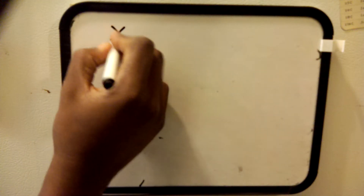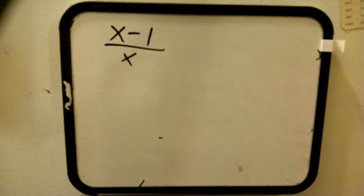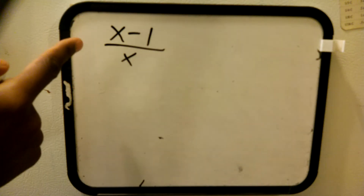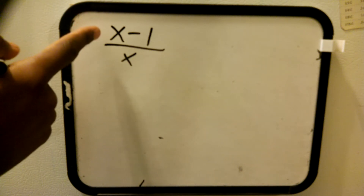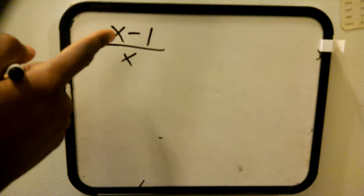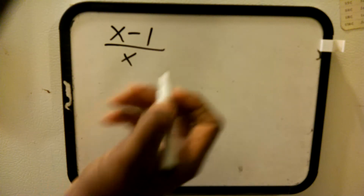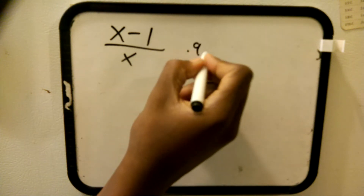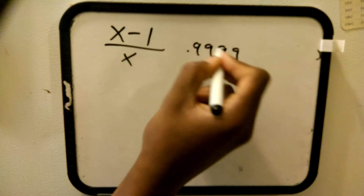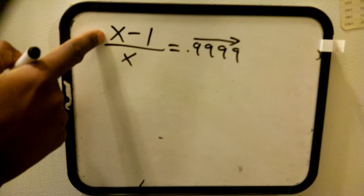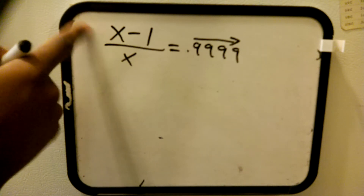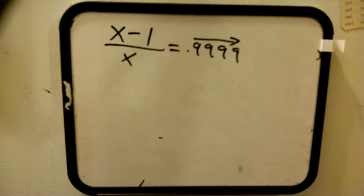Here's the proof. Take an equation like this: x minus 1 over x. As we stick a larger value for x, we begin to approach a number, and that number is 0.9999 infinitely. That's what we're approaching as we put a higher and higher number for x.